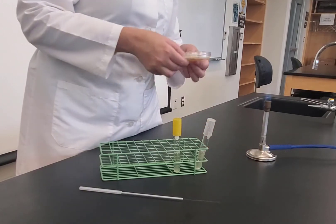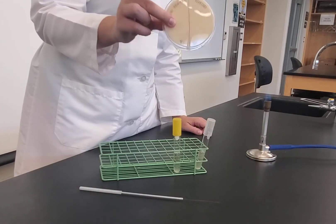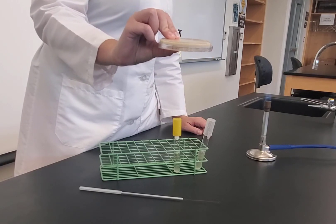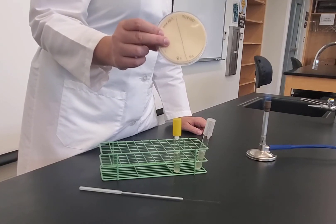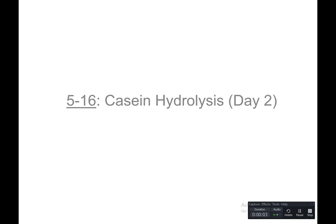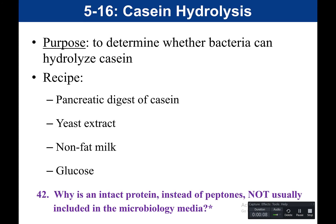The skim milk agar is now inoculated with both bacteria. Place the plate in the incubator agar side up. Next time, we'll examine the plate to see if casein was hydrolyzed — if the milk was broken down. Now we move to Day 2 of casein hydrolysis to discuss the readout. The purpose of this test is to determine whether bacteria can hydrolyze casein, a big bulky milk protein that makes milk cloudy white.